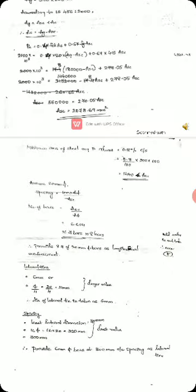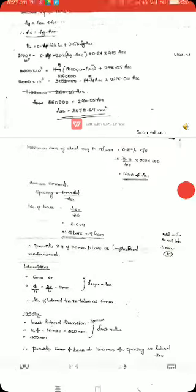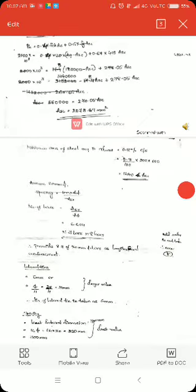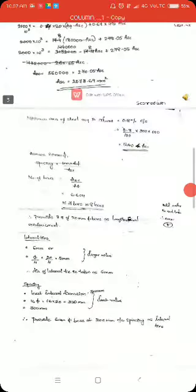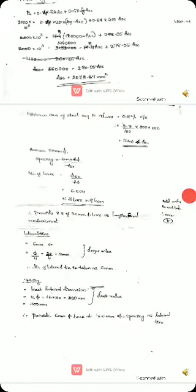We always provide an even number, so we take it as 8 bars. So provide 8 numbers of 20 mm diameter bars as longitudinal reinforcement. We already know that column has two types of reinforcement: longitudinal reinforcement and lateral ties.